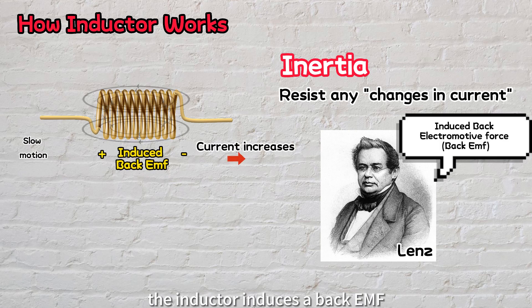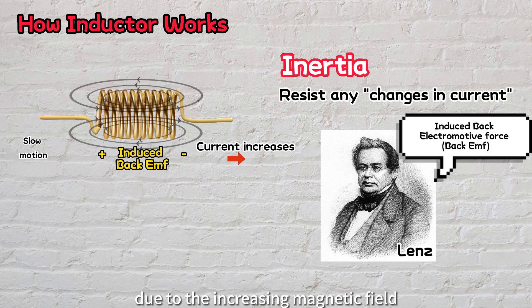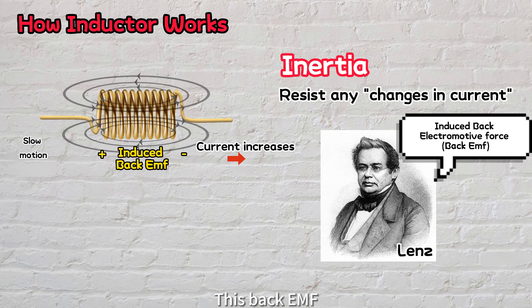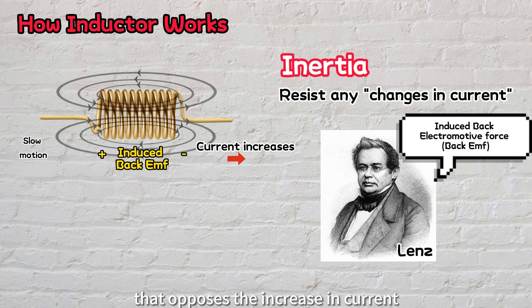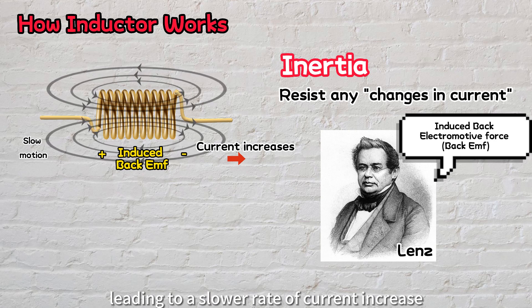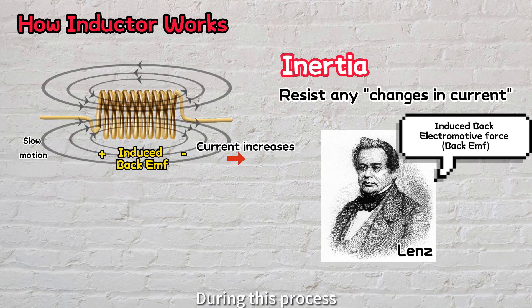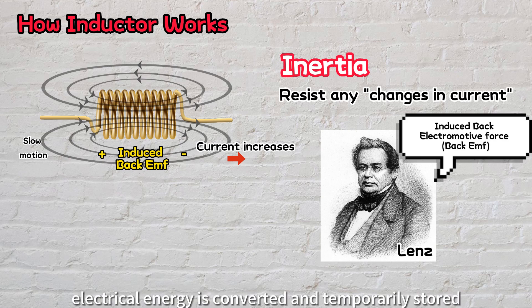When the current increases, the inductor induces a back-EMF due to the increasing magnetic field. This back-EMF is generated in a way that opposes the increase in current, leading to a slower rate of current increase. During this process, electrical energy is converted and temporarily stored in the inductor.